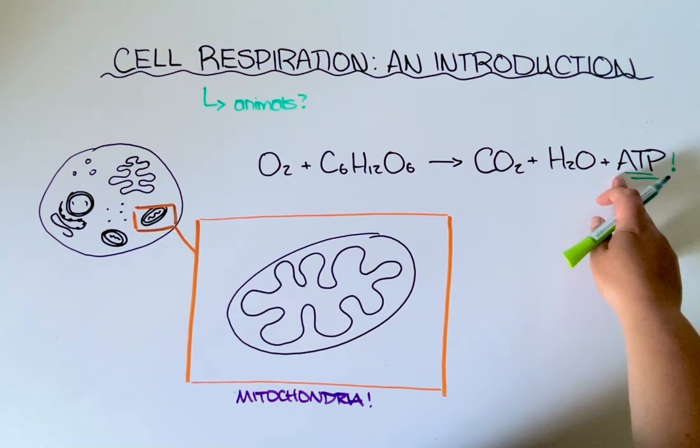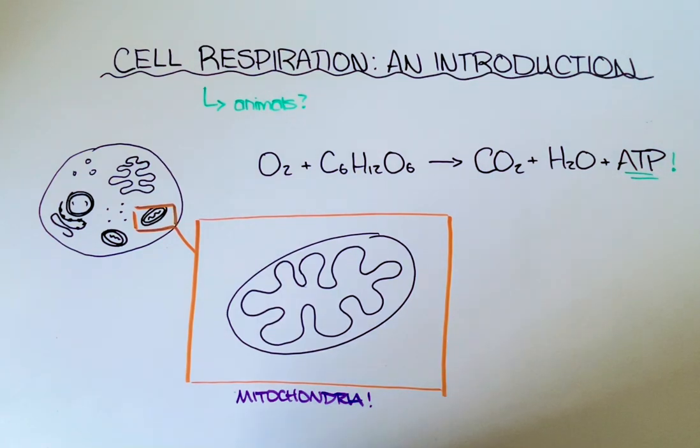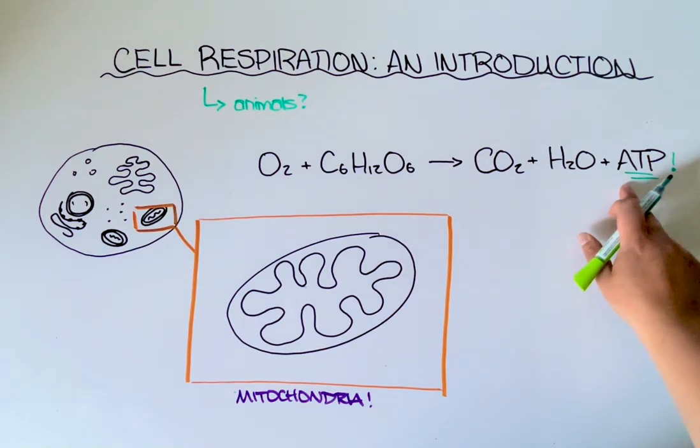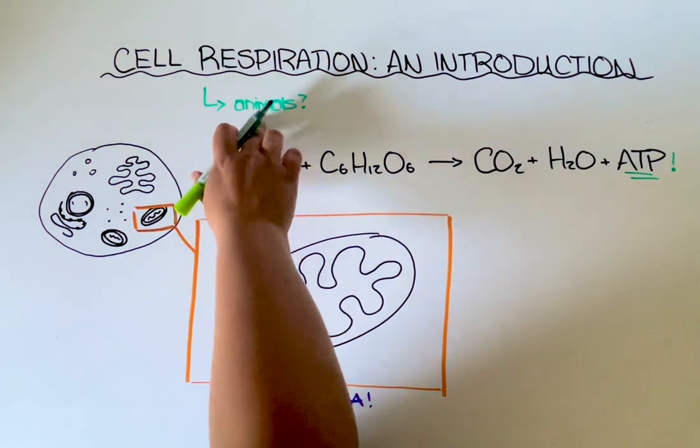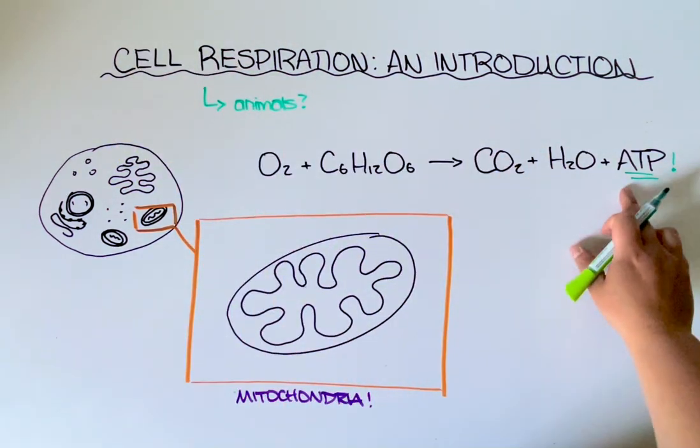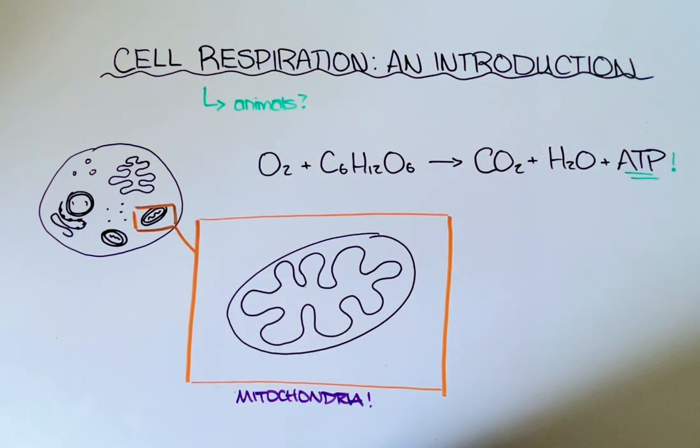ATP is the thing keeping all of us alive right now. It allows our cells to do active transport. If you have muscle cells it allows those organisms to contract their muscles and all sorts of other important things. And so yes if you said animals use cell respiration to make ATP you would absolutely be correct.